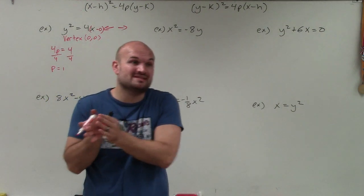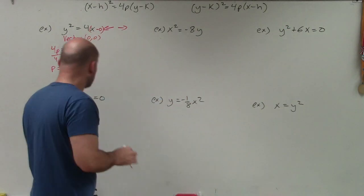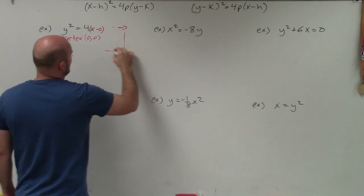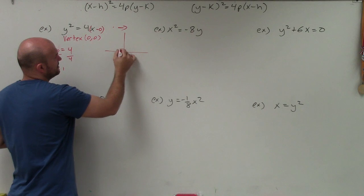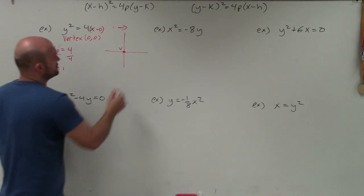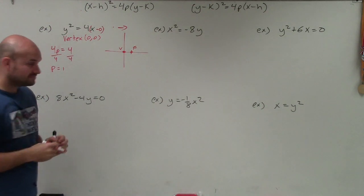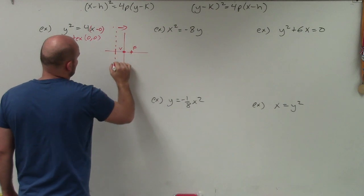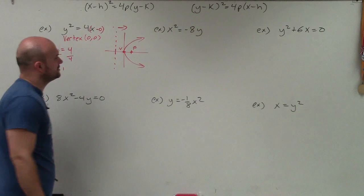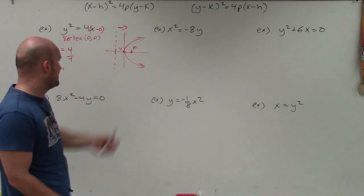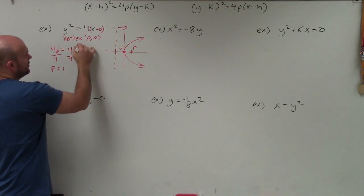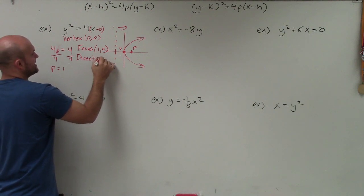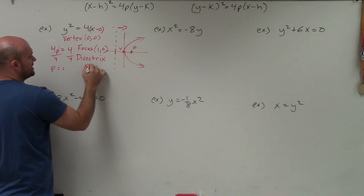Since p is positive, the graph opens to the right. I'll do a quick sketch: the vertex is here, the focus is one unit to the right — I'll label that with an F. The directrix is the same value of p but in the opposite direction, at negative 1 — a vertical line. So the vertex is (0, 0), the focus is (1, 0), and the directrix is x = −1.